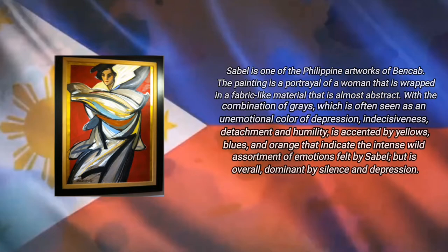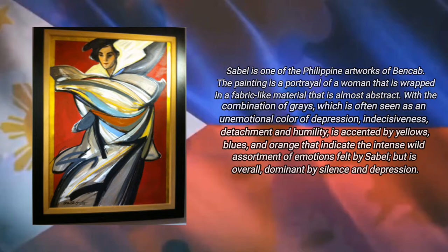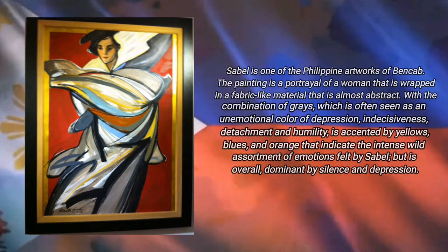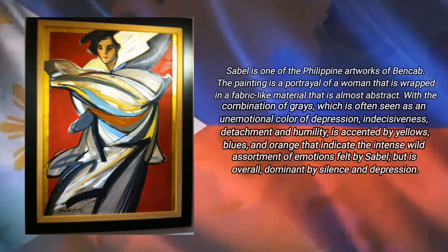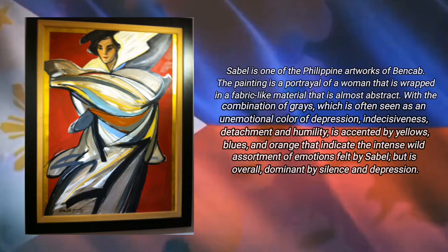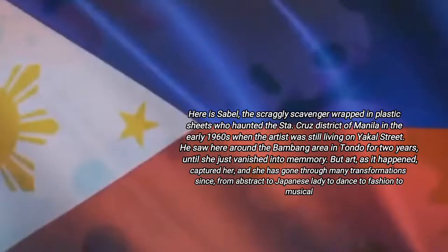The painting is a portrayal of a woman wrapped in a fabric-like material that is almost abstract, with a combination of gray — often seen as the emotional color of depression, decisiveness, detachment, and humility — accented by yellows, blues, and orange that indicate the intense wild assortment of emotions felt by Sabel, but overall dominated by silence and depression.